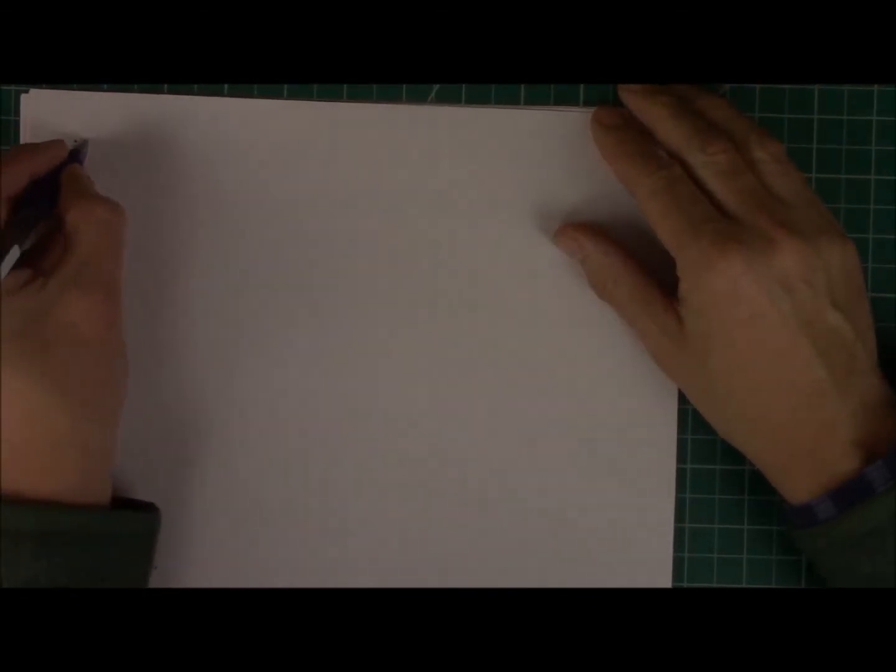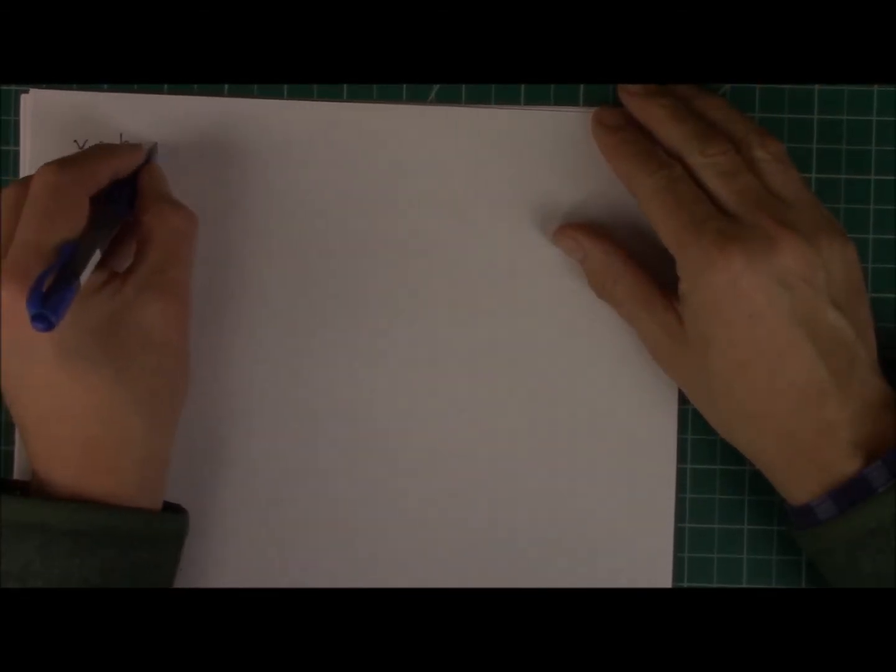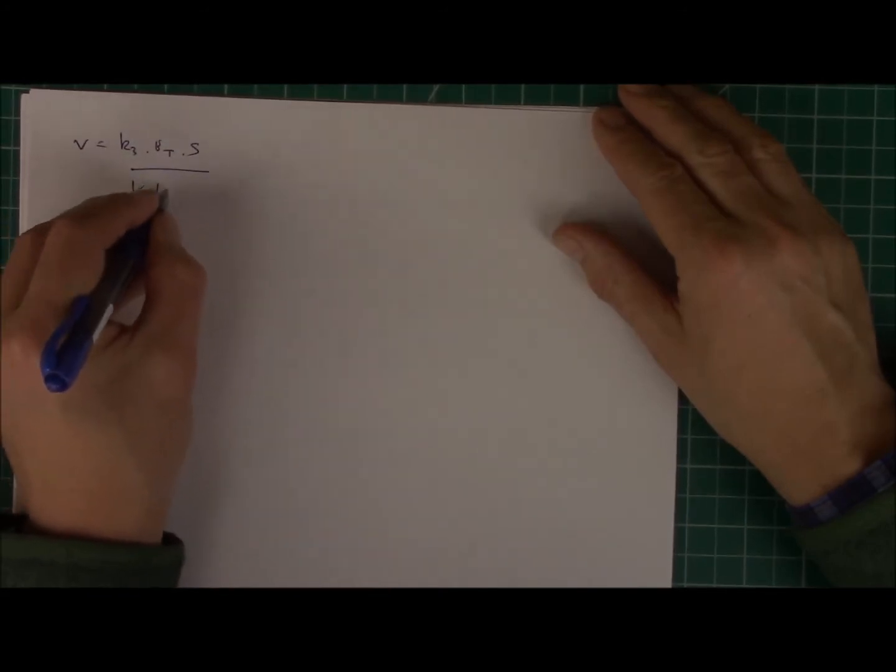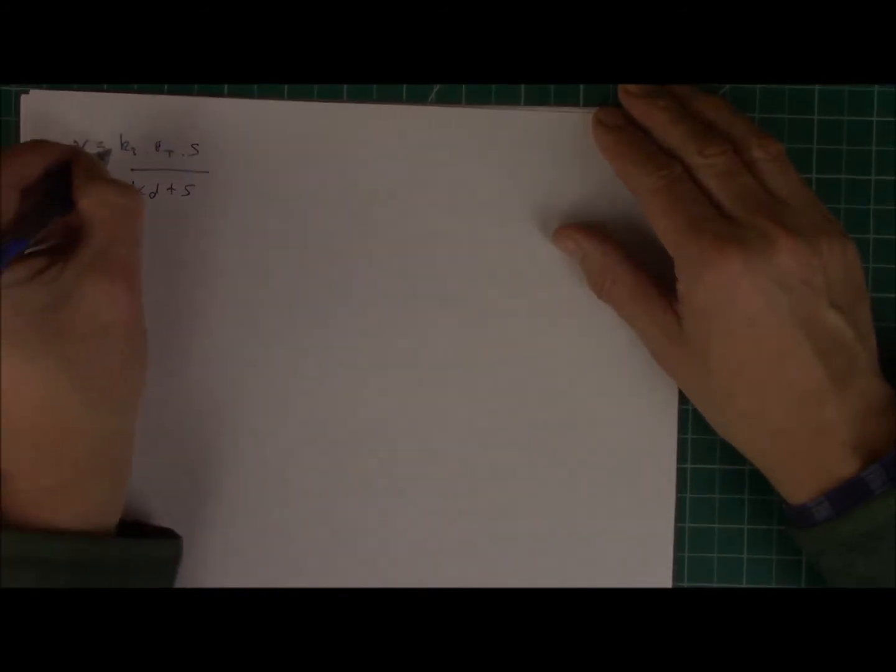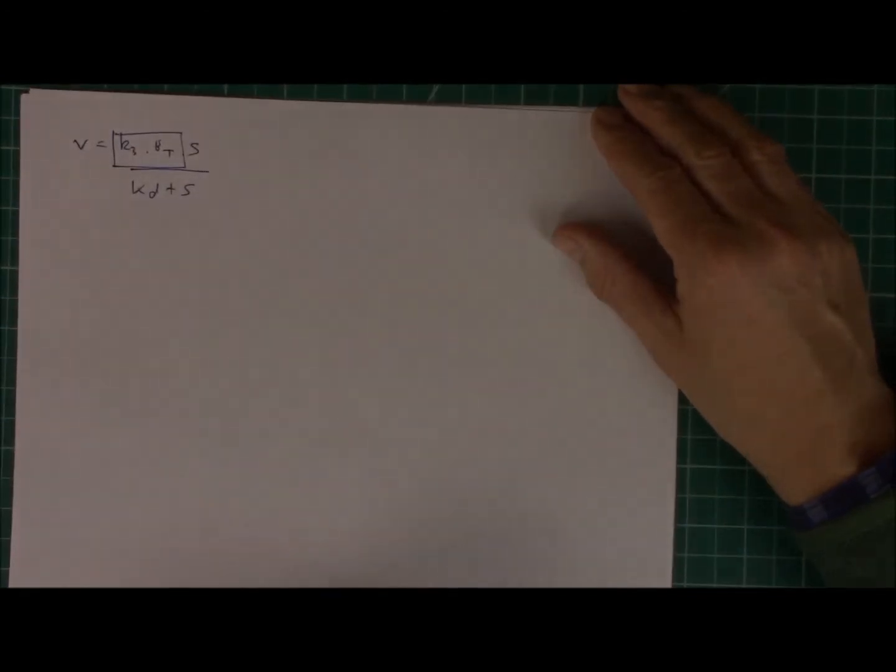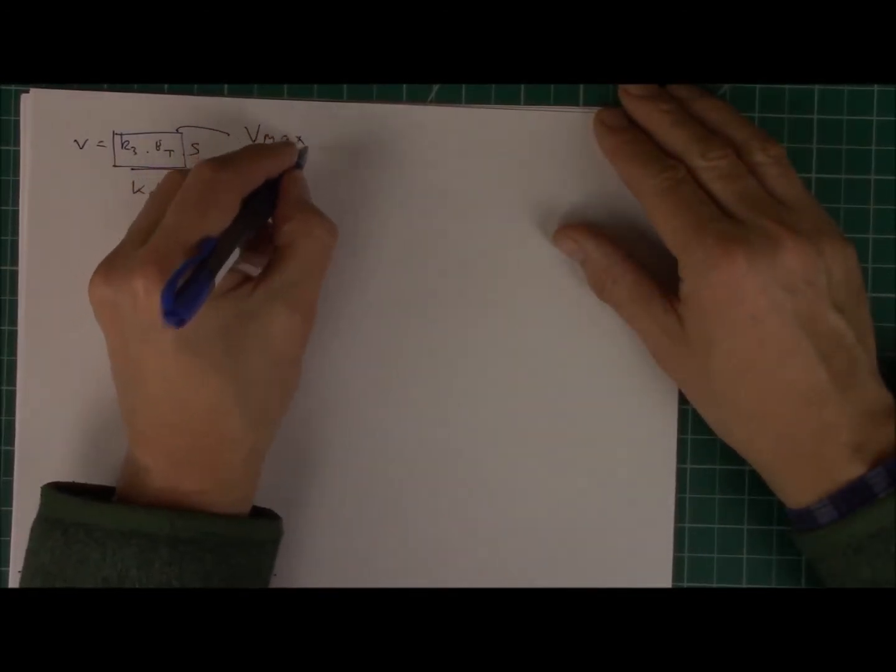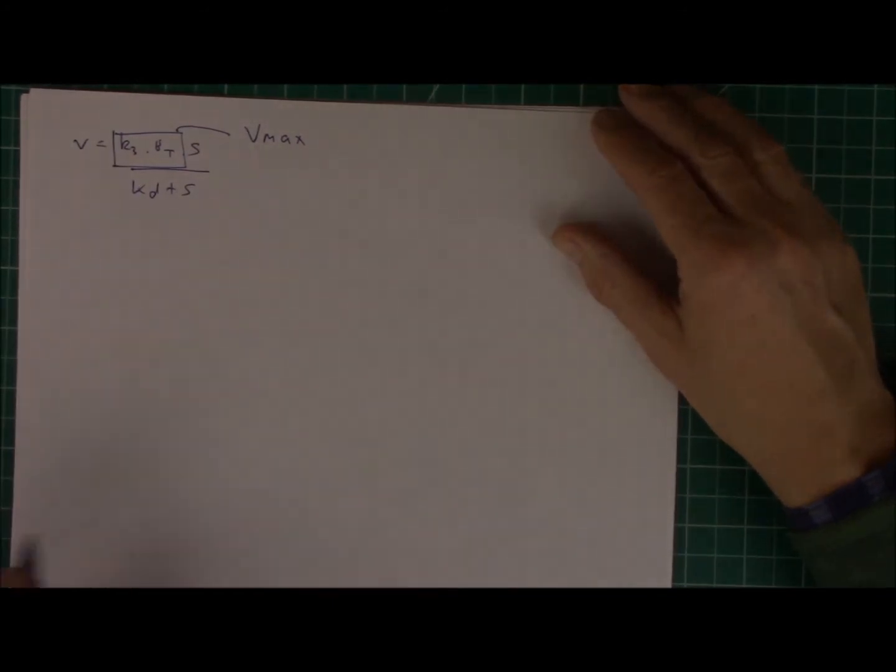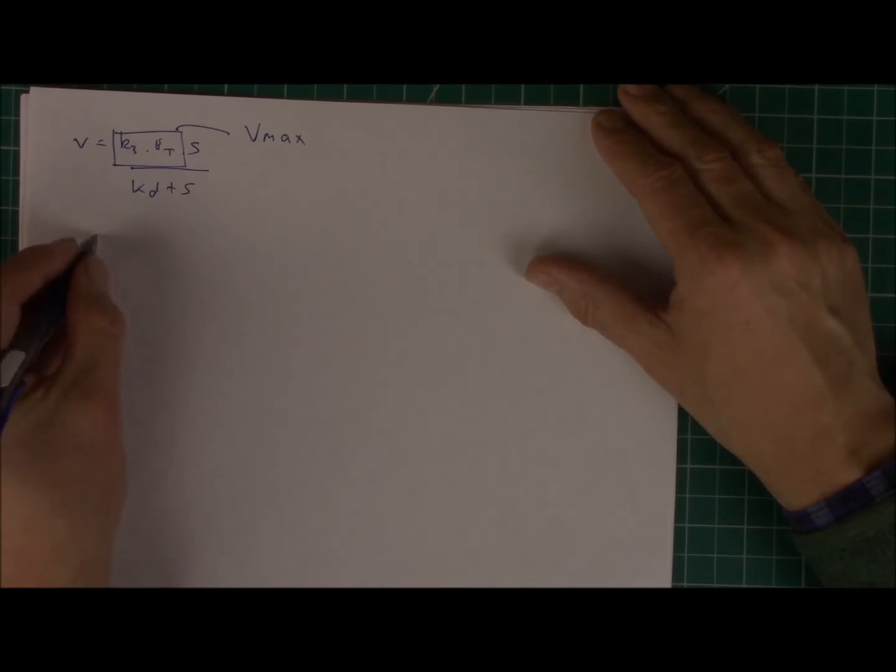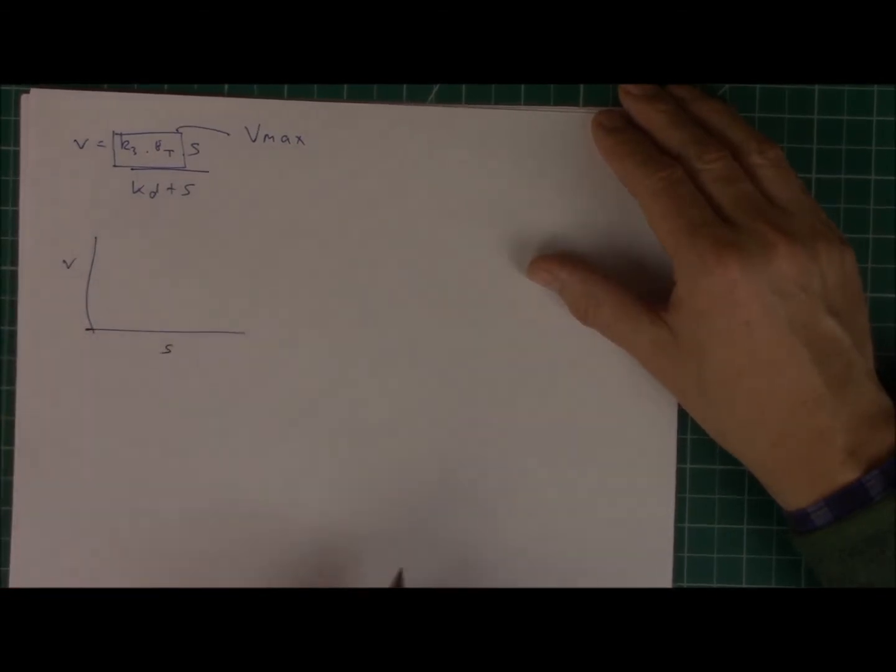So let me just write down what we just had, K3 times ET times S over KD plus S. Now this thing here, this term here, K3 ET, I'm going to call Vmax, and that'll become clear in a minute. What I want to look at are how this behaves. So let's draw V versus S.